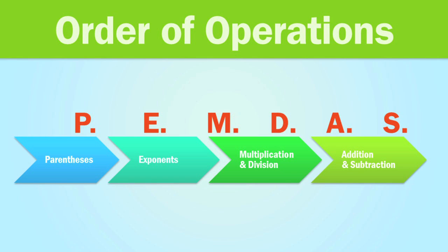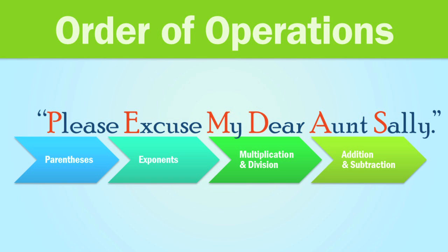Excel knows to use the order of operations whenever it calculates a complex formula, and it's important that you remember it so that you can create formulas that will give you the correct answer. To remember the order, you can just use the acronym PEMDAS. Or, to make it even easier, just remember the phrase: Please Excuse My Dear Aunt Sally.